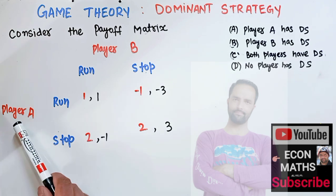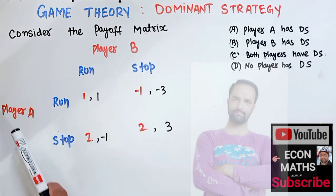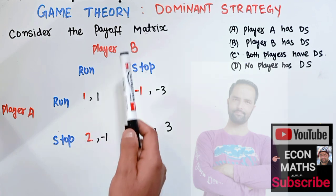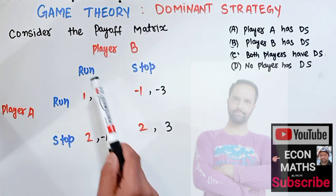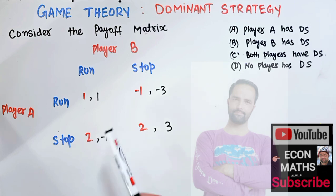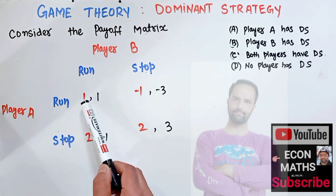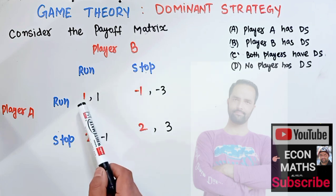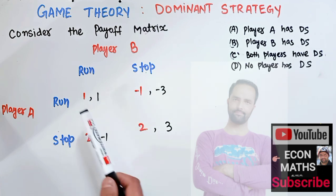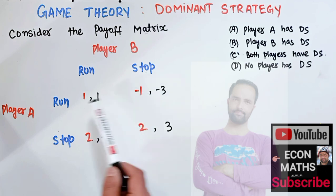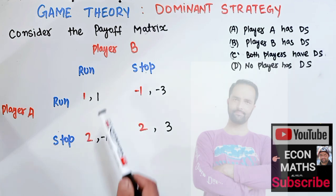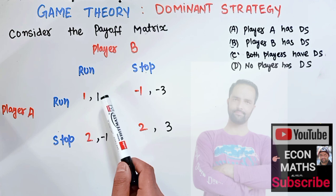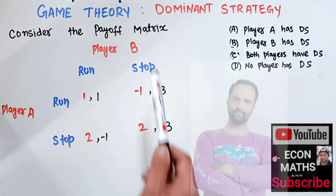We are given two players — player A and player B. Player A has two options: either to run or stop, and symmetrically player B also has two options: either to run or stop. The numbers denote the payoffs. The first number in each cell, shown in red, denotes the payoff for player A, and the second number, shown in blue, denotes the payoff for player B.